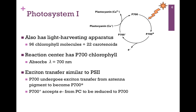Exciton transfer from the light harvesting complexes transfers that energy to the reaction center chlorophyll. Then we have a photo-oxidation event, depicted here at the top of the screen. Our ground state P700 molecule absorbs a photon of light energy at 700 nanometers, which promotes a delocalized electron to an excited state — illustrated as P700*. It will readily give up that electron, return to the ground state, but it's oxidized and carries a positive charge. The electron gets replaced from plastocyanin, which picked up the electron from Cytochrome B6F.